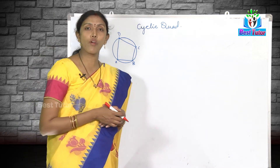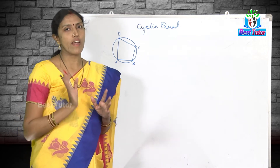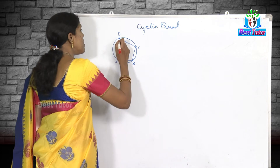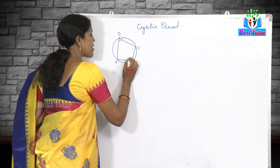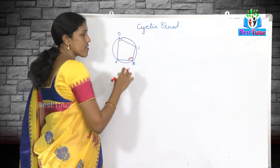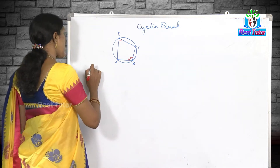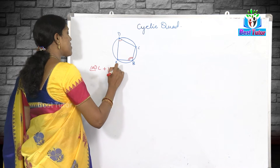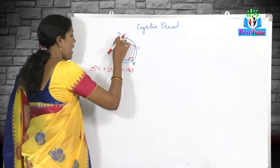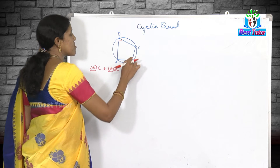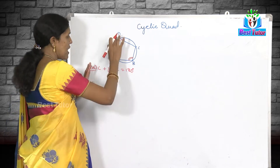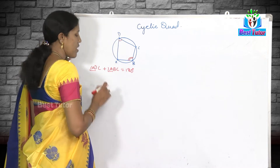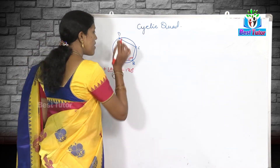The basic property of a quadrilateral is that the sum of all four angles is equal to 360 degrees. Now, because it is a cyclic quadrilateral, we need to prove that opposite angles are supplementary — that means angle ADC plus angle ABC is equal to 180 degrees, or angle DAB plus angle DCB is equal to 180 degrees. Let us consider this pair of angles; if this is proved, the other can be proved automatically.